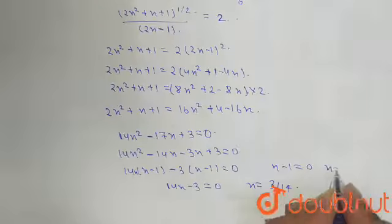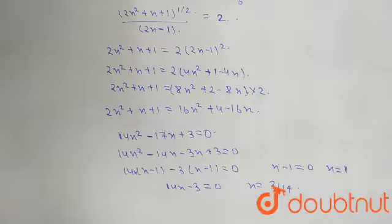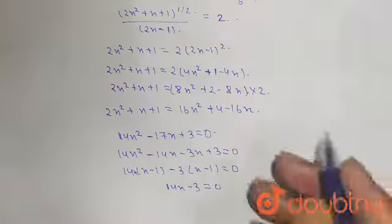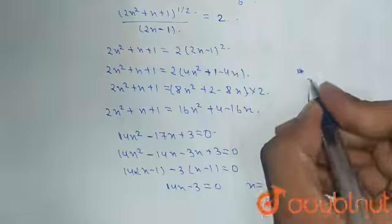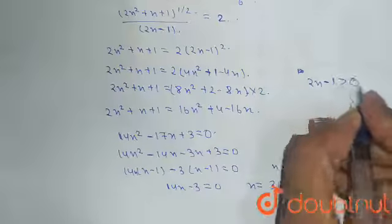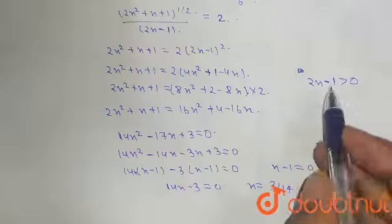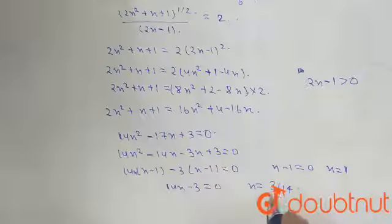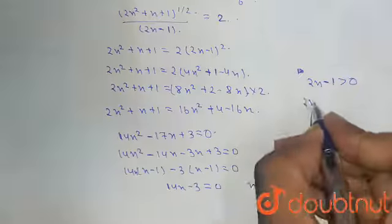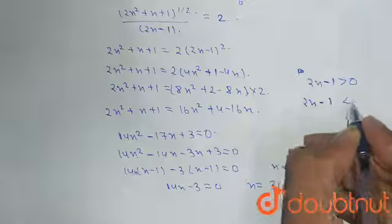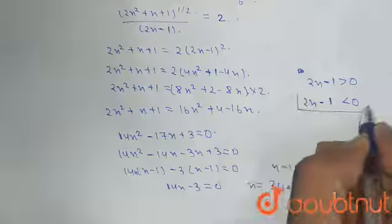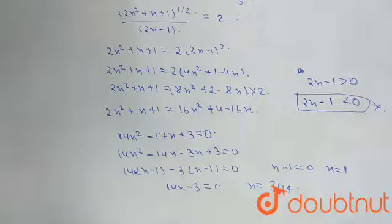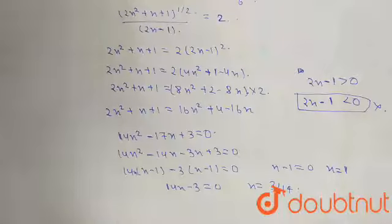Now we check whether our solutions are valid. The condition we must satisfy is 2x - 1 greater than 0. When we put x equals 1, this is satisfied. But when we put x equals 3/14, we get 2x - 1 less than 0, which is not acceptable. So there is only a single value, x equals 1. Thank you friends, hope you like the video.